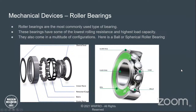Here's what it looks like when it's all together: the outer race with the ball in the groove, the inner race with the ball in the groove, the rolling elements, and a cage — in this case it's metal, riveted together — and the two seals on either side.